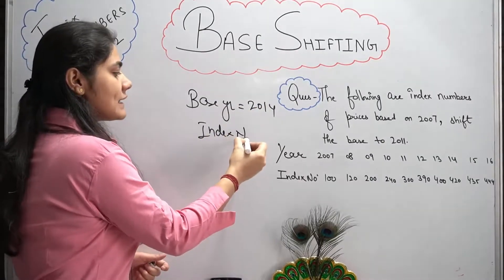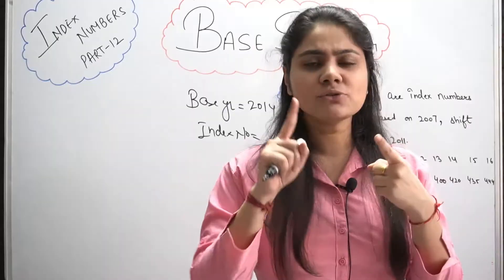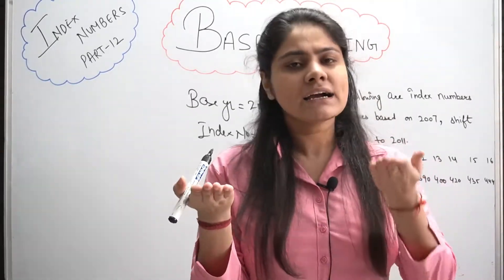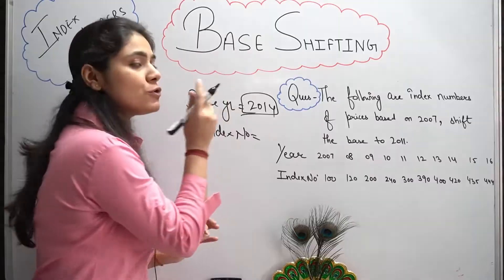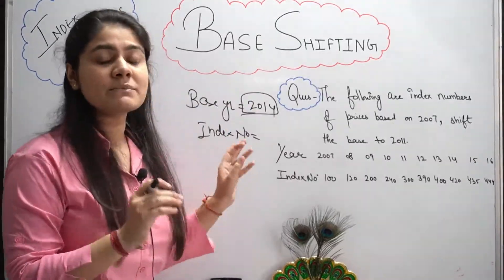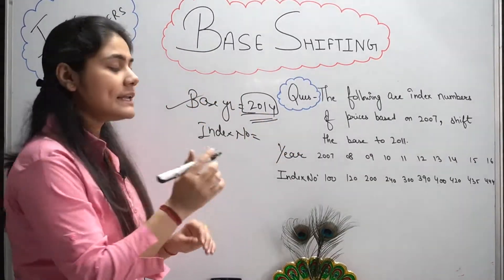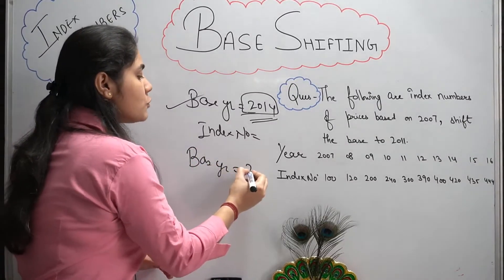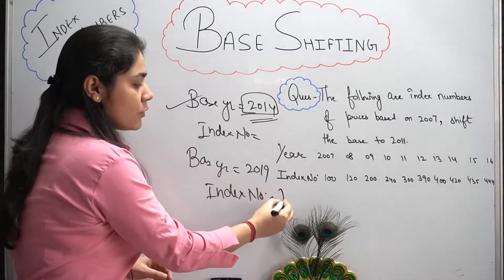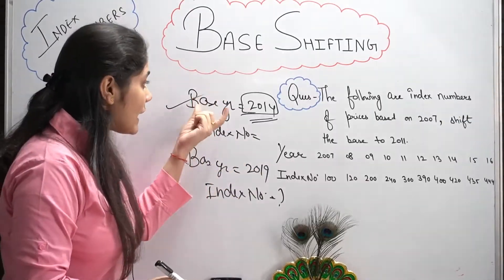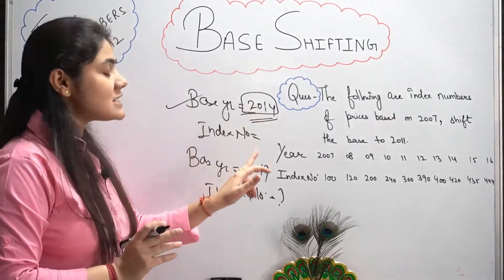And you have given me the index number. If you are given the index number, you should have a base year and a current year. I have given you base year and current year, and you have given me all the index numbers. Now if the base year was 2014 and I change the base year to 2019, you will not need to recalculate all the index numbers again.